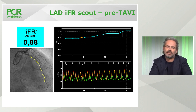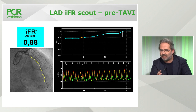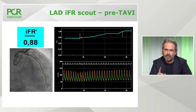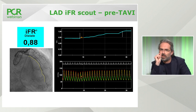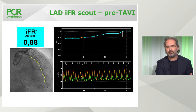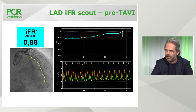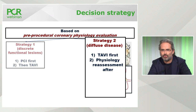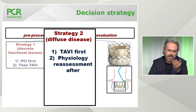Going back to the case, iFR was used in resting conditions to measure the clinical significance of the LAD lesion. The value was below 0.89, indicating significance — but 0.88-0.89 means only very mild ischemia. Looking at the iFR pullback scouting, this is very diffuse disease with no single spot to fix. So we have very mild ischemia, diffuse heavily calcific disease, and the need for full lesion coverage — a very complex PCI.